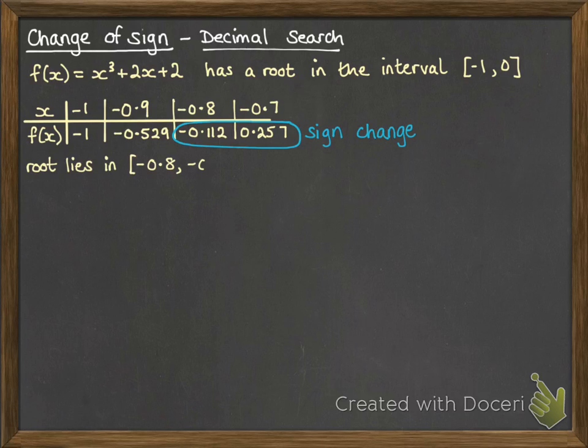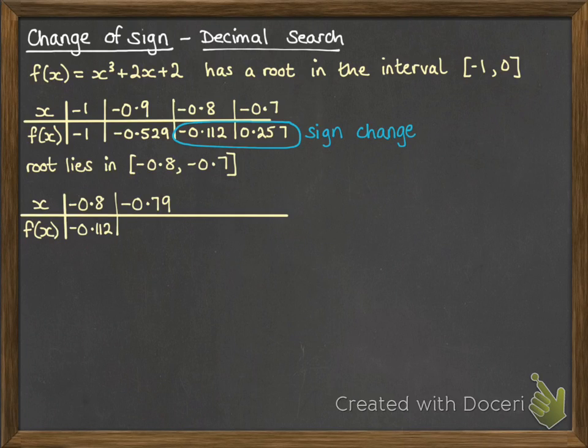So that means that our root lies in that interval. Now we're going to go another step further than that and try to narrow down our search, so we're looking at the second decimal place. So we've already done -0.8. Now we'll go to -0.79, just moving a tiny bit further along. That one still gives us a negative answer.